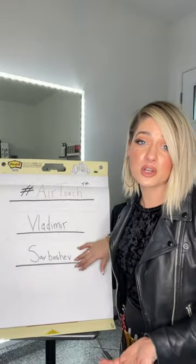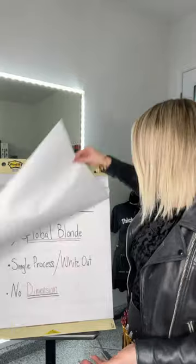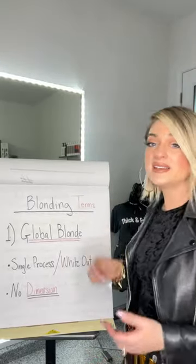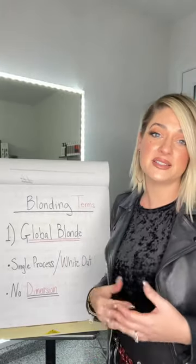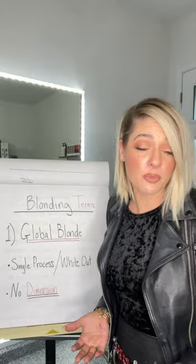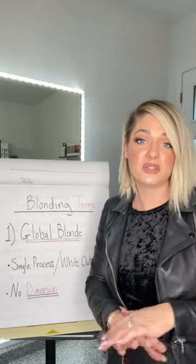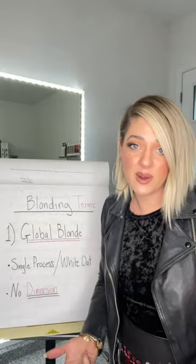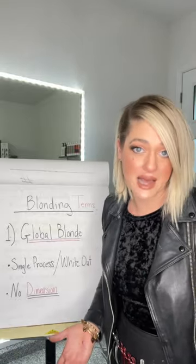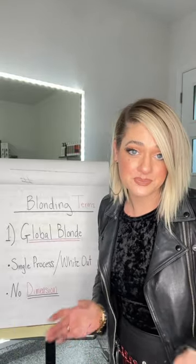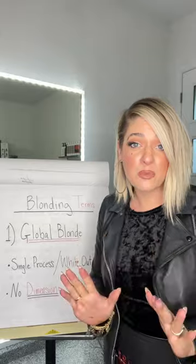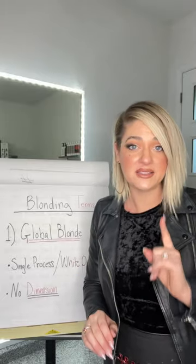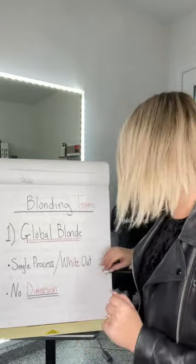We're going to start the lecture by breaking down blonding terminology in terms of standard techniques. The first blonding terminology we are familiar with is called global blonding. Global blonde is what I would consider a single process color — a white out leaving no dimension. It's the way we create what we consider platinum.